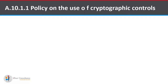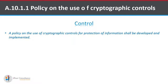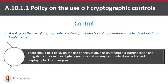Policy A.10.1.1, i.e., policy on the use of cryptographic control. The control says a policy on the use of cryptographic controls for the protection of information shall be developed and implemented. Further, it talks about the policy covering use of encryption, plus cryptographic authentication and integrity controls such as digital signatures and message authentication codes, and cryptographic key management.